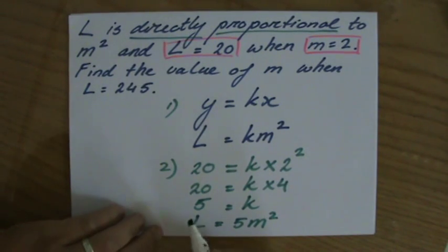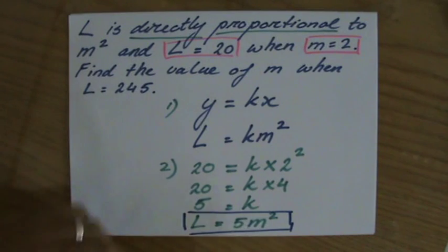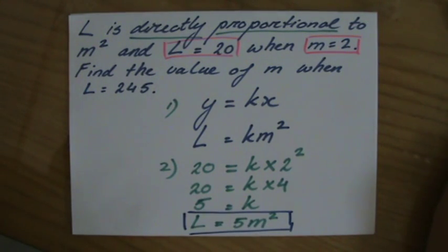Okay? Let me put a blue box around that now. Considering we did it in green. L equals 5 times m to the power 2.